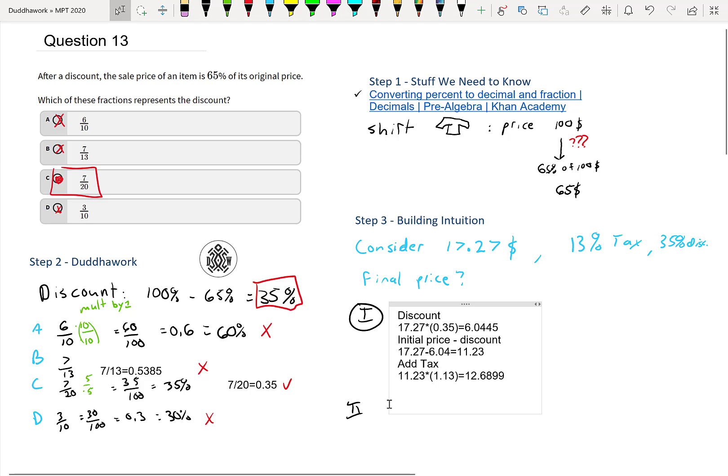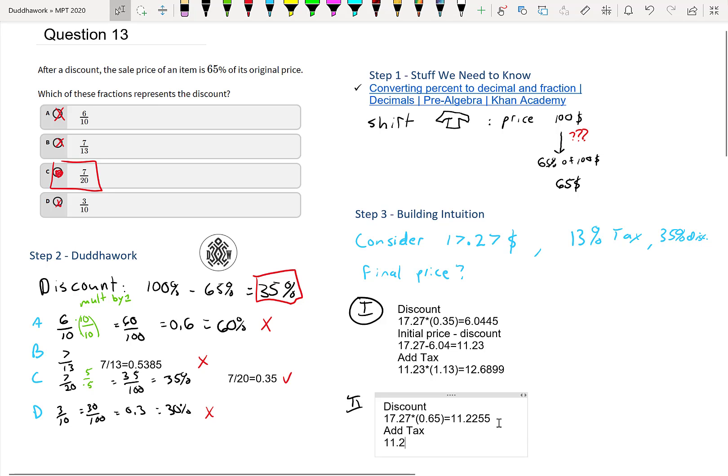So let's do it using another method now. So instead we can calculate the discount using the 65%. Instead of subtracting, we can do right away. So it's 17.27 times 0.65. And that should give us 11.23. And it does. And then we add the tax. So if you want, you could do it all in one shot because it's all multiplication and it doesn't matter, but I'll do it in two steps anyways. So it's 11.23 times 1.13.